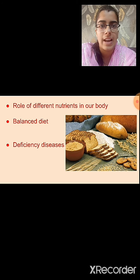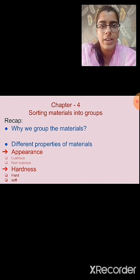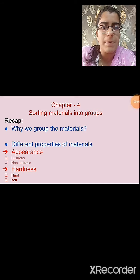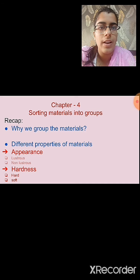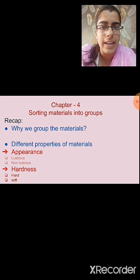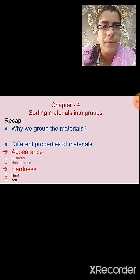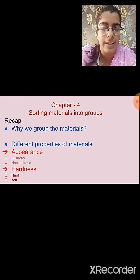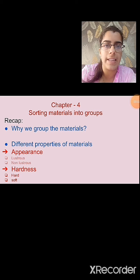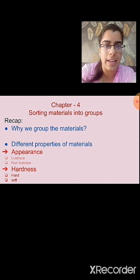Now let's see chapter number 4: Sorting Materials Into Groups. We group materials based on our convenience — it is easier to locate and count them. Different materials are required to make different objects, and one object can also be made using different kinds of materials. To make an object, we choose the material based on its property and the purpose for which the object is to be used.